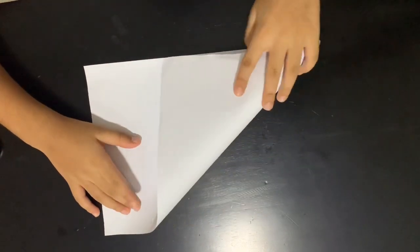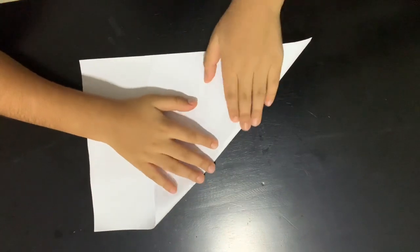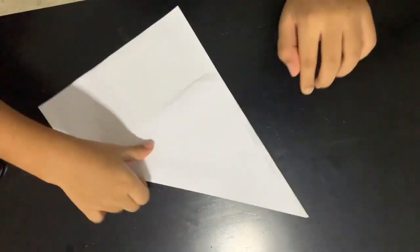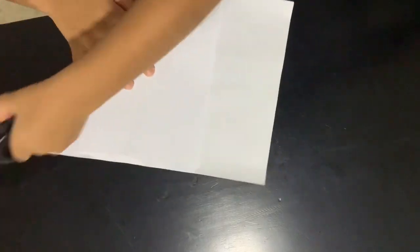To start, you can take an A4 sheet because we're gonna make this with origami square paper. So if you have origami square paper, you don't need to do these two steps. I'm making the rectangle paper a square one—cut out the excess.